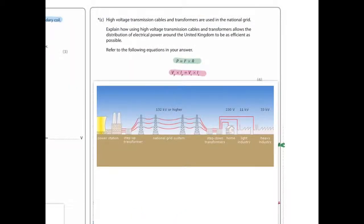High voltage transmission cables and transformers are used in the national grid. Explain how using high voltage transmission cables and transformers allows the distribution of electrical power around the United Kingdom to be as efficient as possible. Refer to the following equations in your answer.